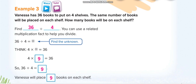Here is the third example: there are thirty-six books to put on four shelves, with the same number of books on each shelf. How many books will be on each shelf? You divide the total by four: thirty-six divided by four equals nine.